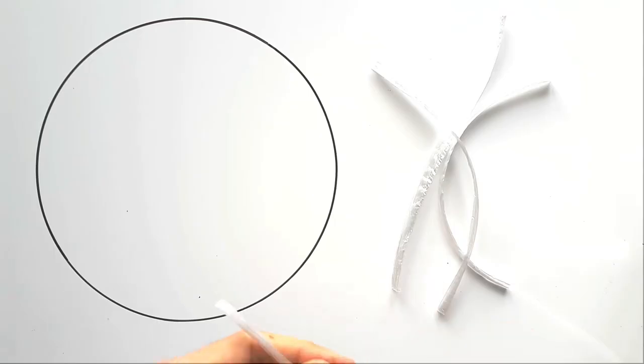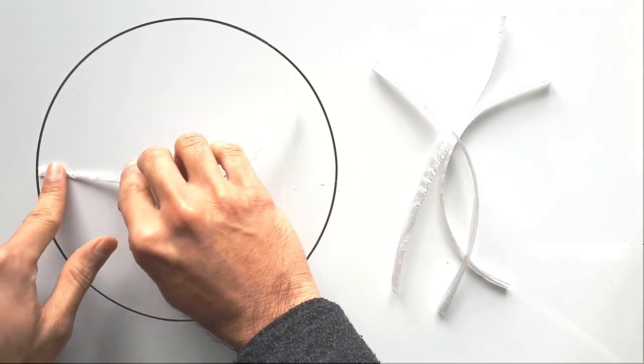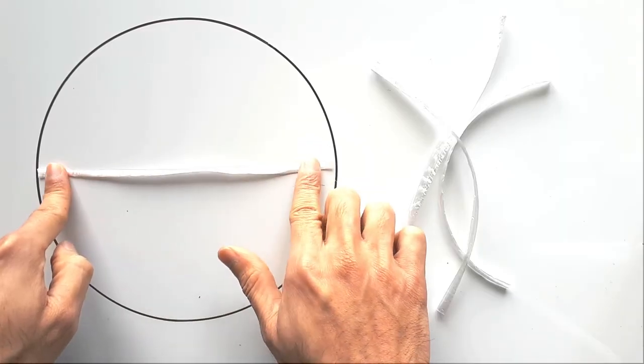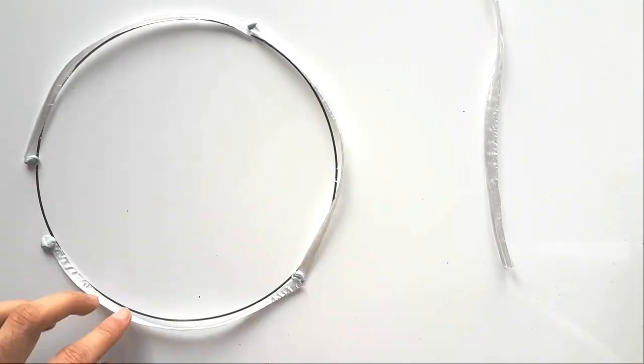Now grab some string and cut a few pieces to match the circle's width or diameter. Each string represents one diameter. Question: If you wrap them around the circle, how many would you need?